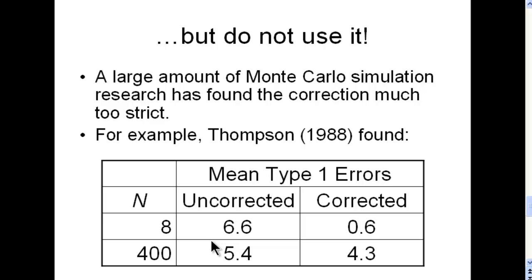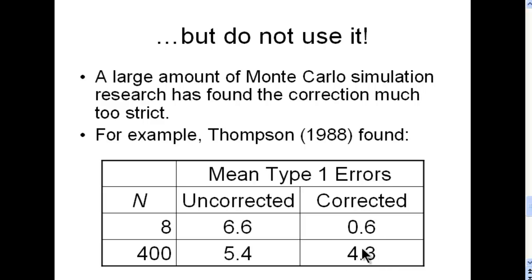What Thompson did is analyze data that he knew had a 5% type 1 error rate — alpha equal to .05 — and that's what the chi-square analysis should have identified. In the uncorrected Pearson chi-square case, for a sample size of 8, which is very small, an average type 1 error rate of 6.6% was found. You would expect exactly 5%, but 6.6% isn't that bad. When the sample size is up to 400, the type 1 error rate comes out pretty close to what you expect. But when you apply Yates' correction to Pearson chi-square for the same data with a sample size of 8, the type 1 error rate drops to 0.6% — which is just way too conservative. Even at a sample size of 400, it's still below the 5% we would expect.